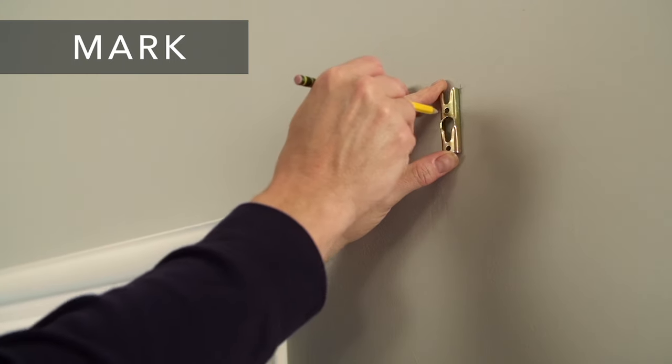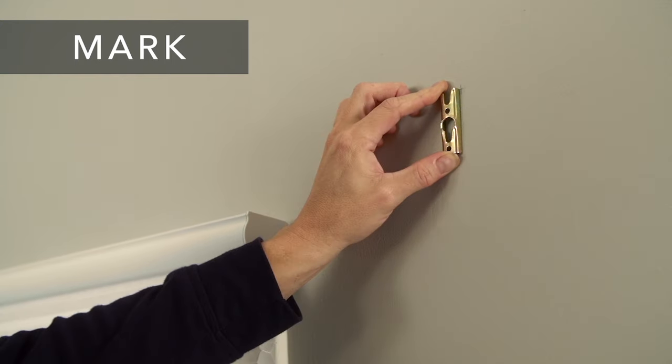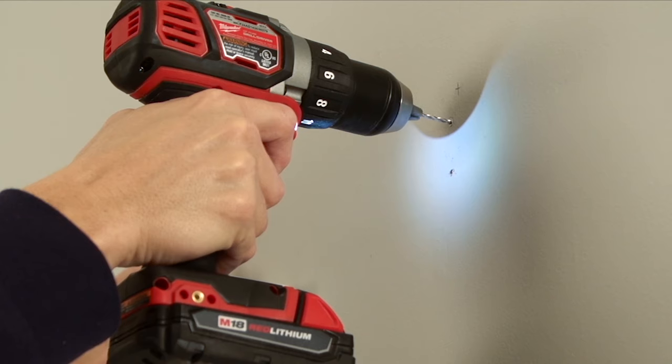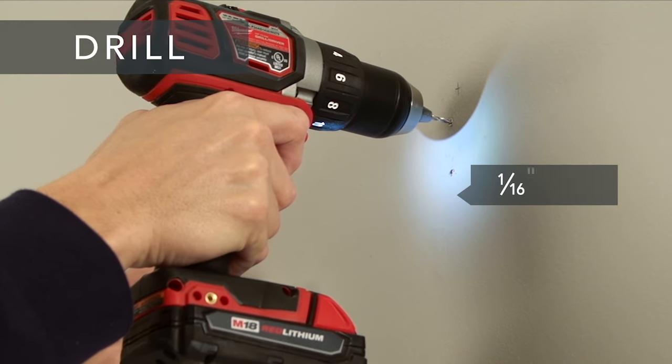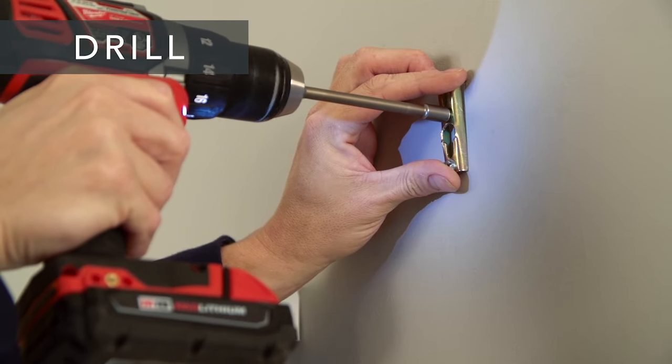Now, place the center of the bracket on the width mark and the top of the bracket just below the length mark and mark the holes of the bracket. Next, drill the holes for the screws with a 1/16th inch drill bit and screw the bracket securely into place.